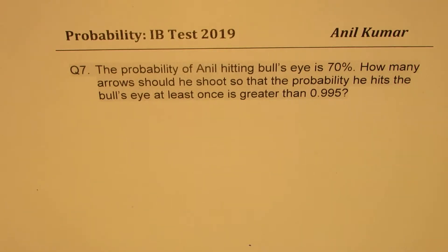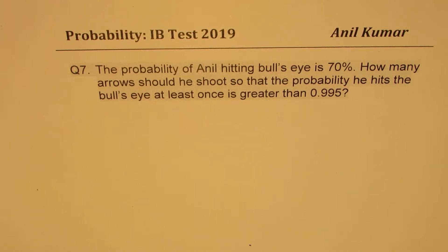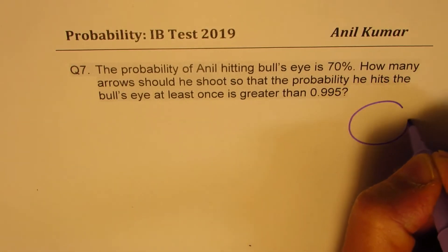I am Anil Kumar sharing with you a very interesting question from a previous test paper. In the solution of this question, it is important to understand not only how to find the probability but also how to use logarithms to calculate the value. Question number seven: the probability of Anil hitting the bull's eye is 70 percent. How many arrows should he shoot so that the probability he hits the bull's eye at least once is greater than 0.995?